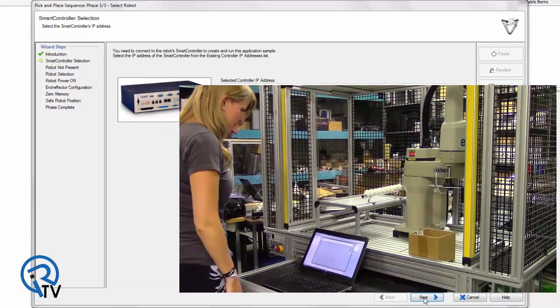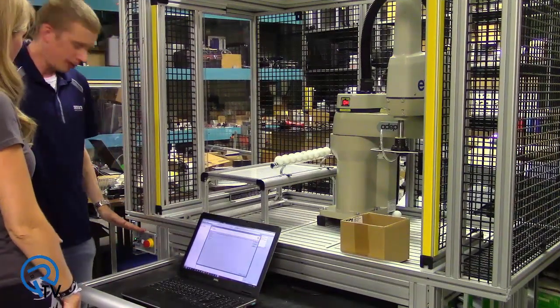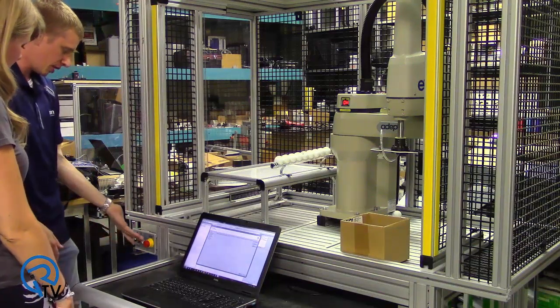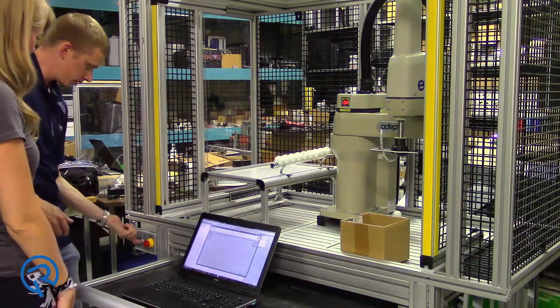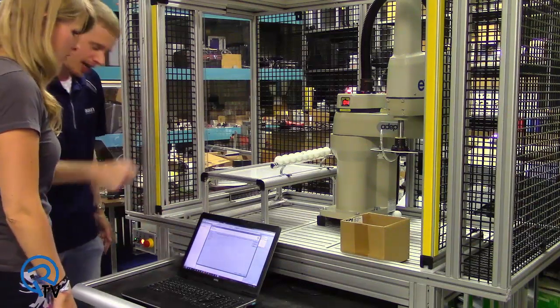All right, our robot's connected. Okay, now it's telling us we need to turn the robot power on. Okay. This box comes with every robot which makes it really simple with e-stop and power control. Okay, turn that button on. All right, robot now says on. Robot now says on, hit next.